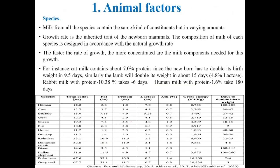The first animal factor is species. Milk from all species — human, cow, buffalo, goat, sheep, pig, horse, donkey — contains the same kind of constituents but in varying amounts. Growth rate is an inherited trait, and the composition of milk is designed in accordance with the natural growth rate. The faster the rate of growth, the more concentrated the milk components needed for that growth.